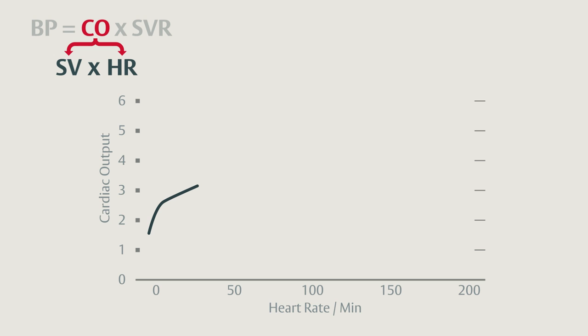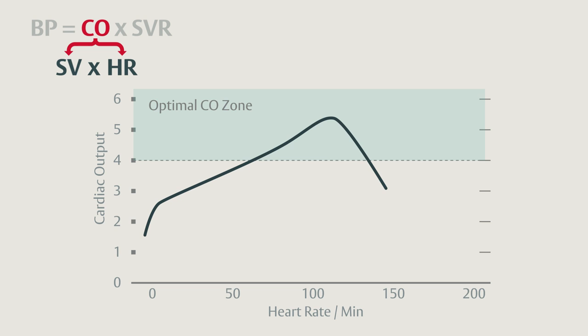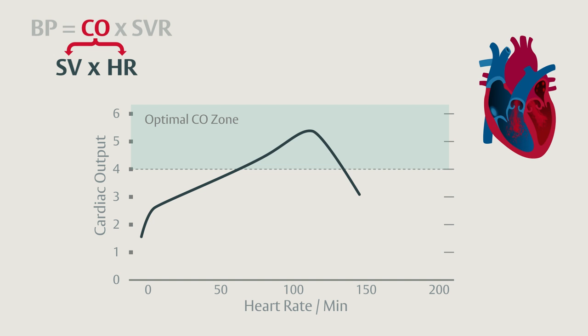Let's start by considering heart rate's effect on cardiac output. As this diagram shows, very slow and very fast heart rates can negatively impact cardiac output. Heart rates between 50 to 110 beats per minute do not usually produce low cardiac output states. Heart rhythm is also important to cardiac output — atrial fibrillation, for example, can impact the volume due to the loss of atrial contraction.